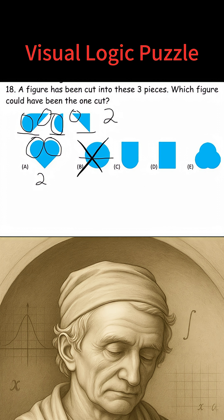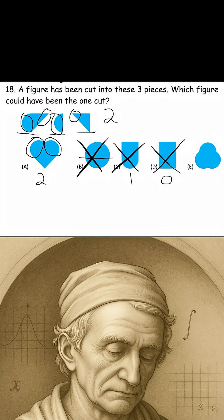In answer choice C, we have one curved side, so that's not right. In D, we don't have any curved sides. And in E, we have three.